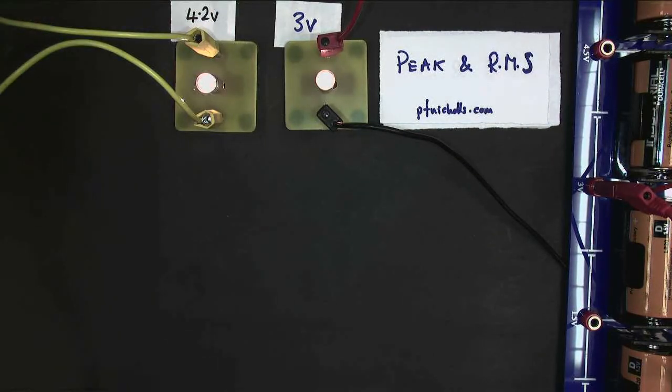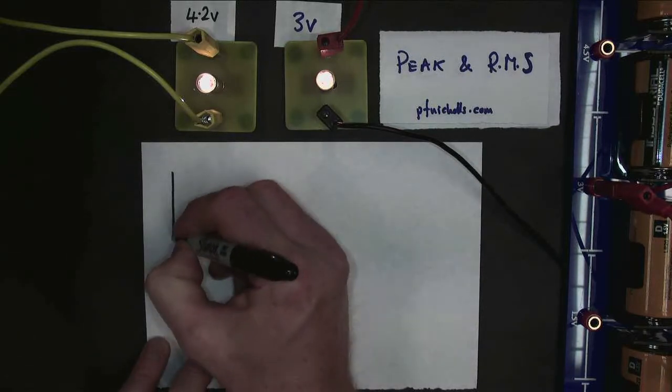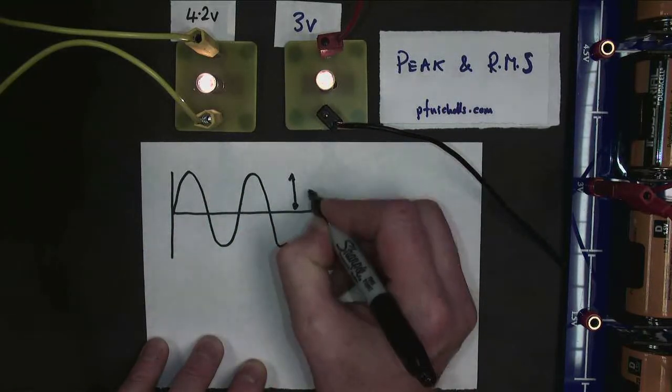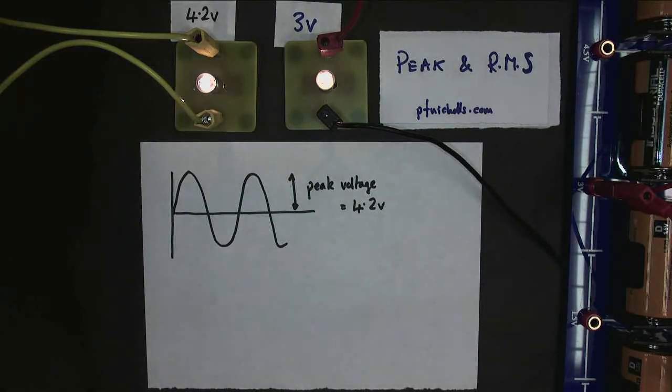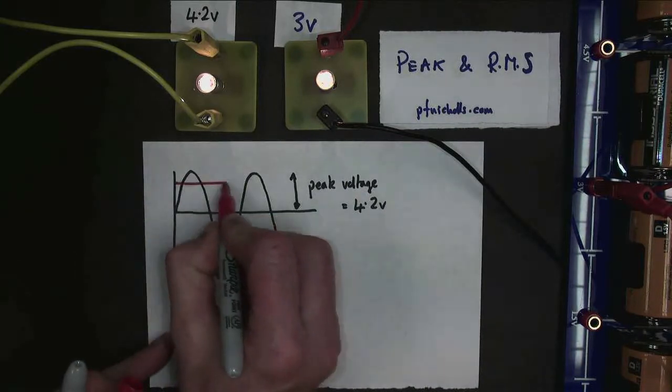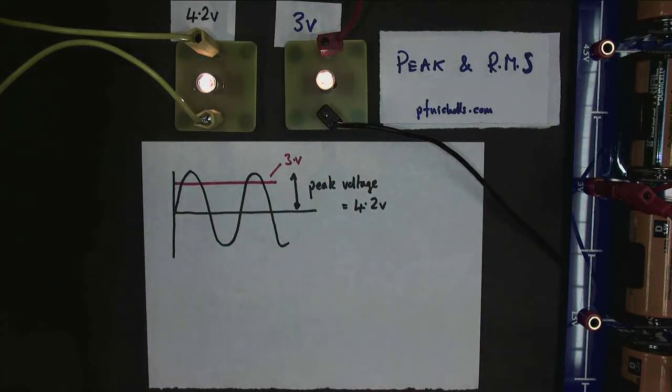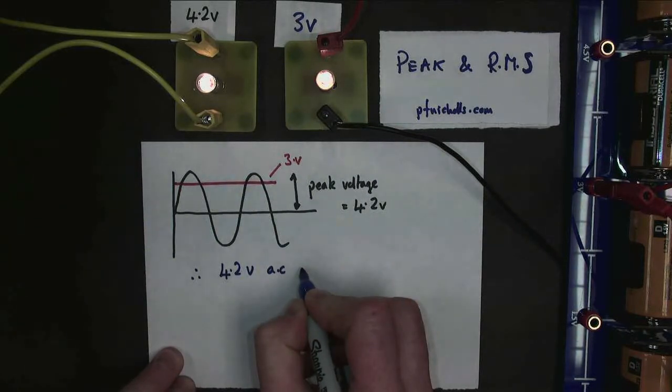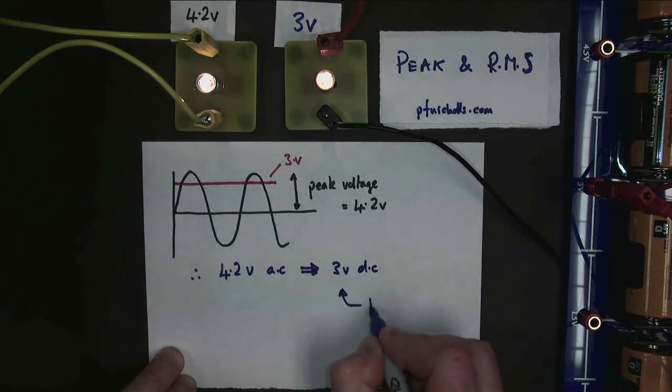And then let's see if we can add any of our theory into place. We should know that the AC value is represented by the peak voltage, which in this case is 4.2 volts. And we have an equivalent DC voltage, which in this case is 3 volts. Those create an equivalent lighting effect. Therefore, 4.2 volts AC is equivalent to 3 volts DC. This value here is what we call the RMS value. It stands for root mean square. It's the average.